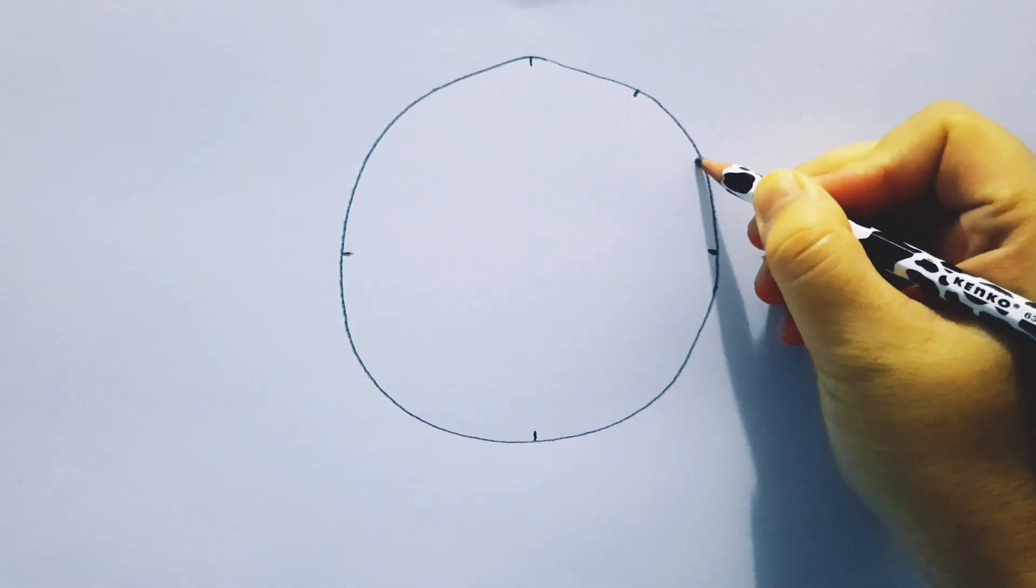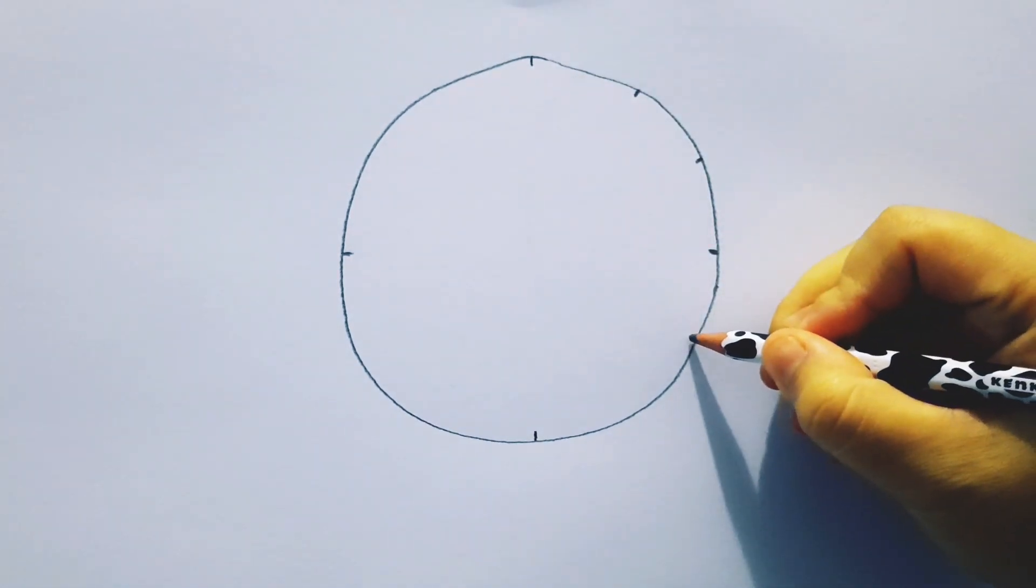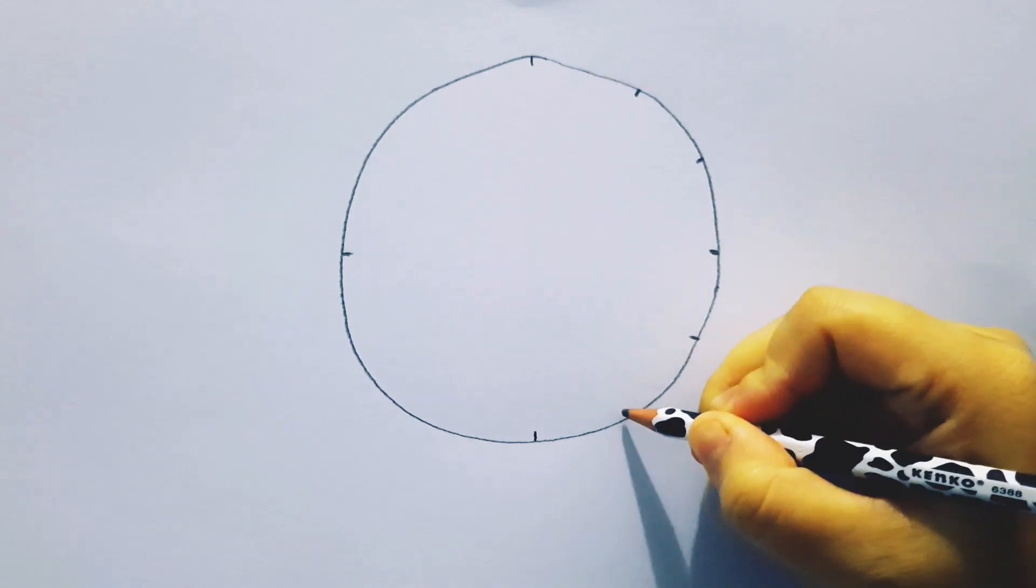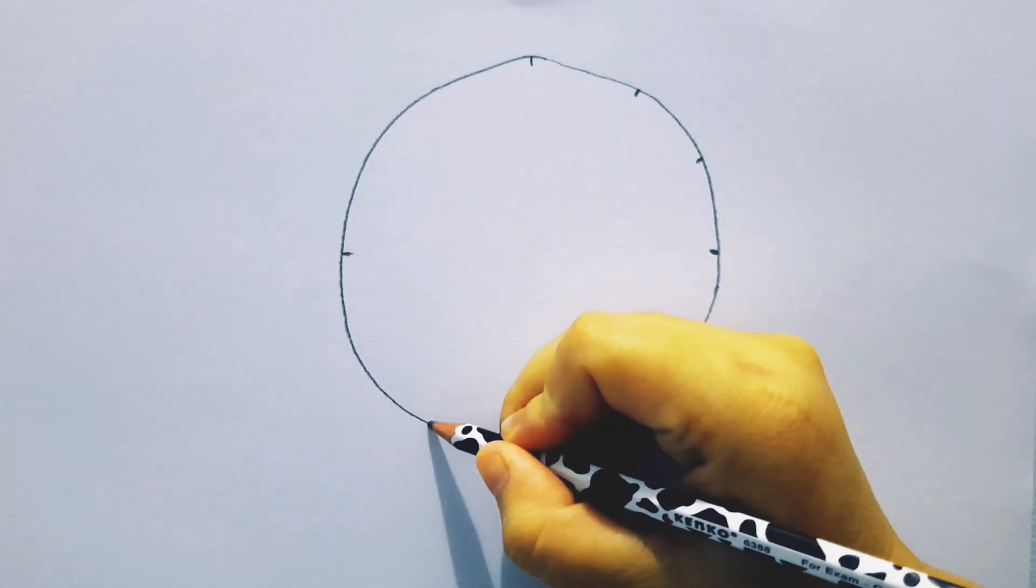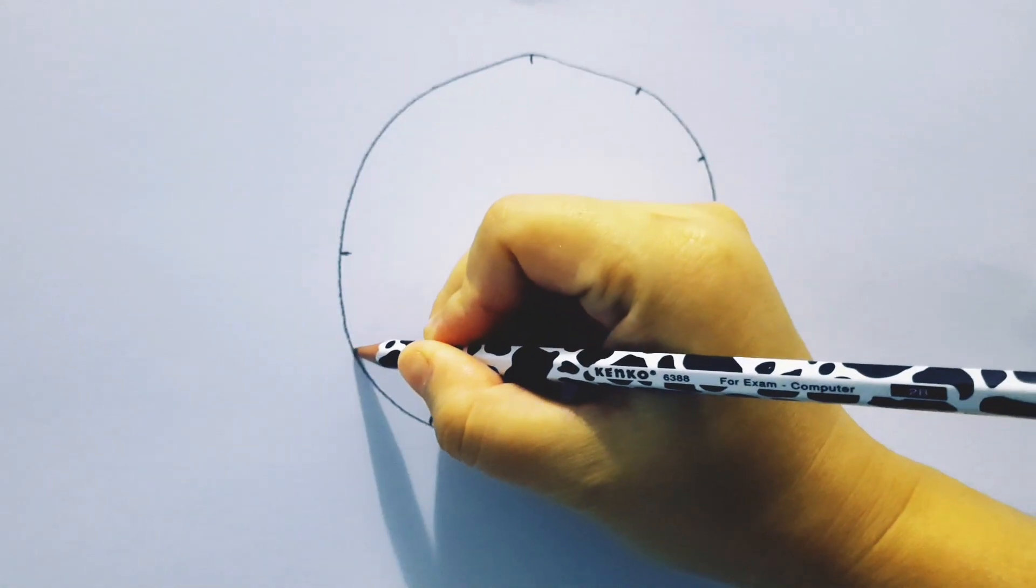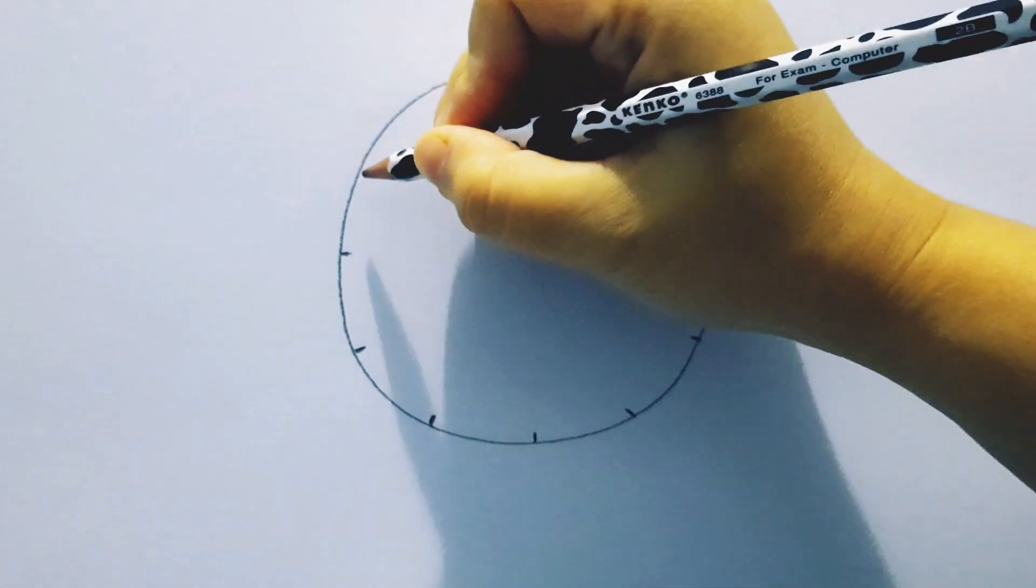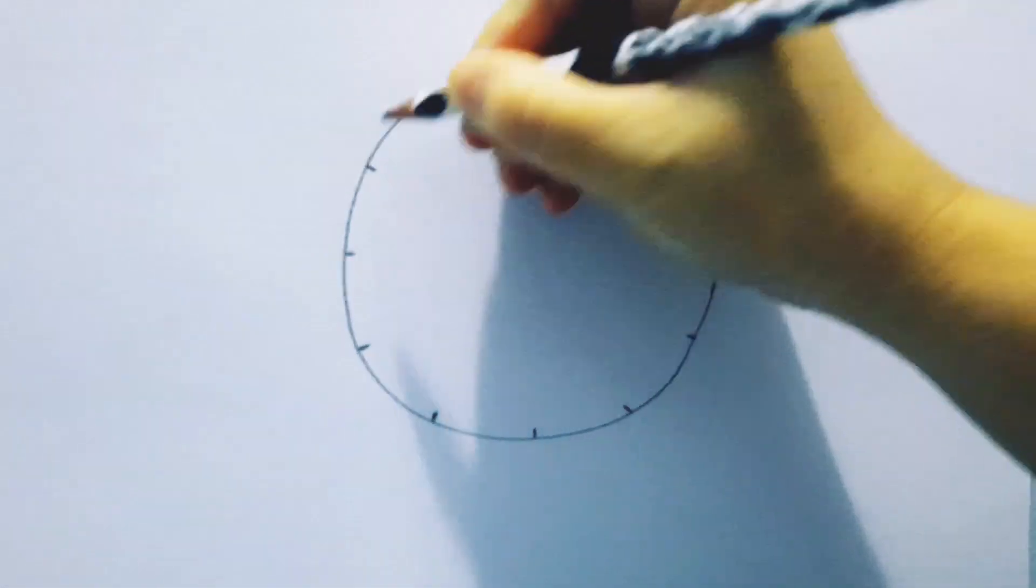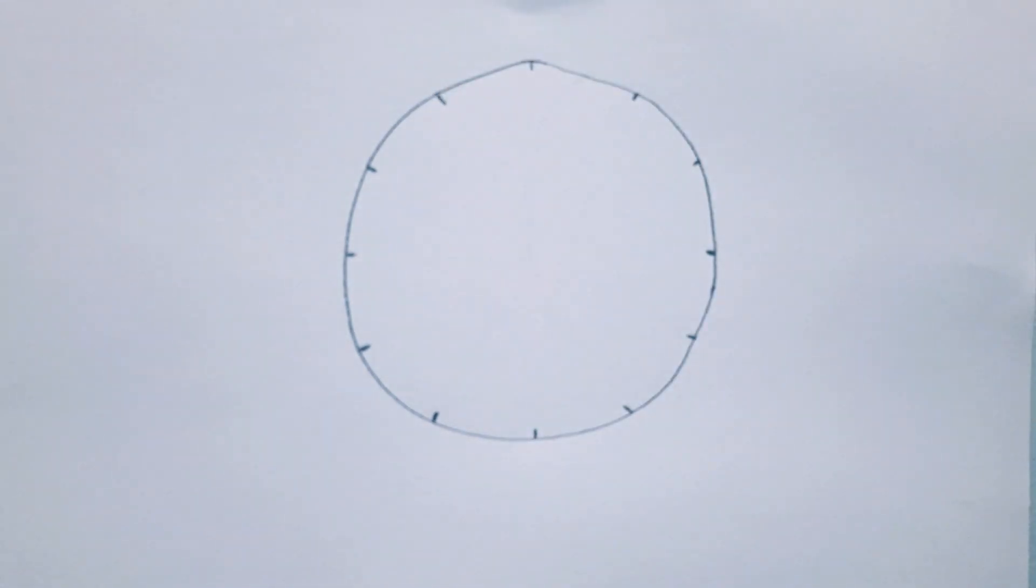Next. Now let's put another two marks between the marks we have made before. Just like this. Don't forget to make them equal between one another. Are you done?